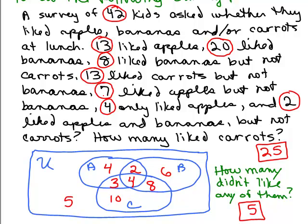Seven liked apples but not bananas — look at the apple circle and disregard the intersection with bananas; what's left is 4 and 3, which adds up to 7. Four only liked apples — that group is the 4 in just the apple region. Two liked apples and bananas but not carrots — that's the intersection region excluding carrots, which is 2. We've checked all the way through, the Venn diagram is correct. How many liked carrots? The carrot circle adds up to 25. How many didn't like any? That's 5.